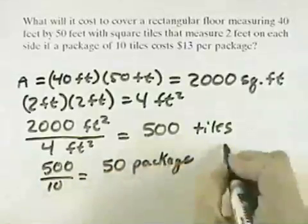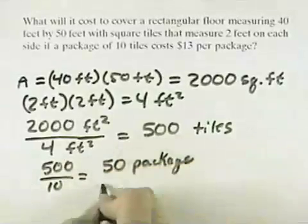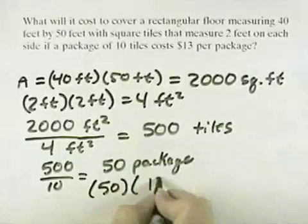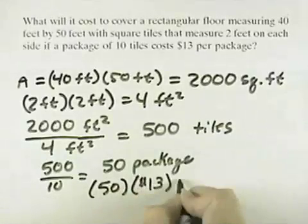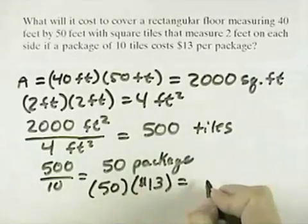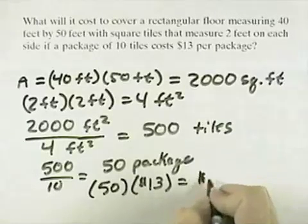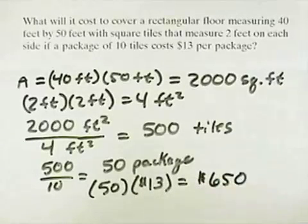And now that means at $13 per package, we'd have 50 times $13, and the total cost for that would be $650 for the tiles.